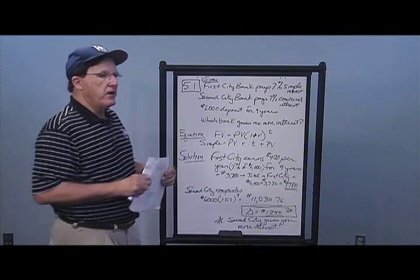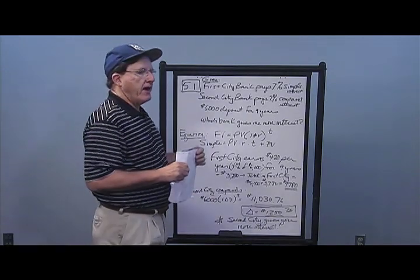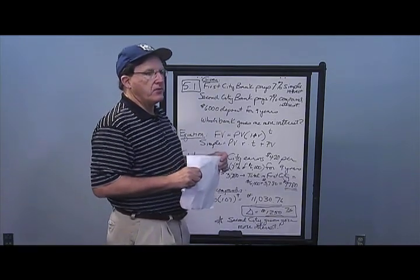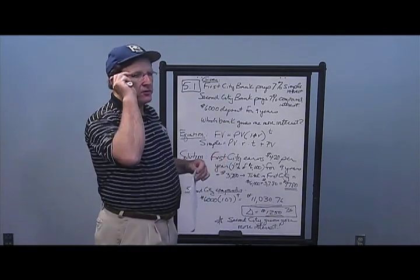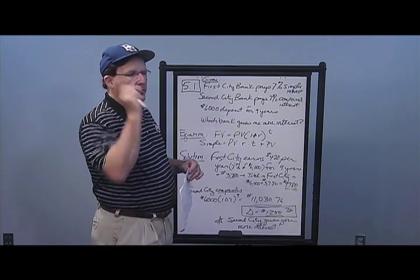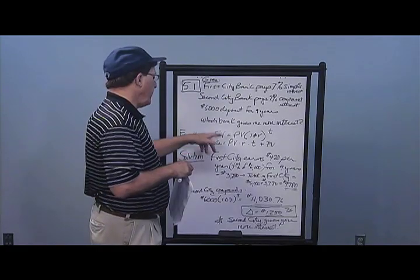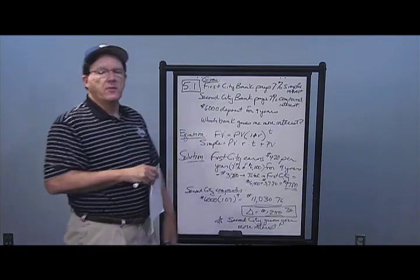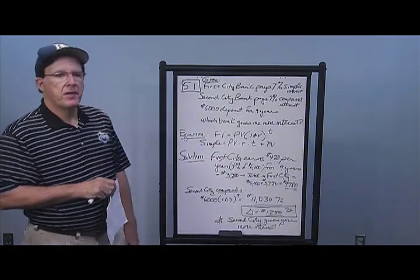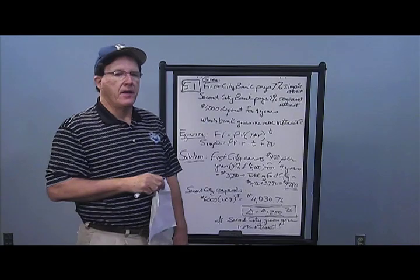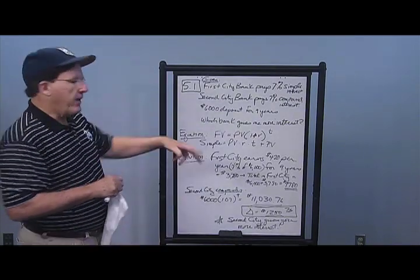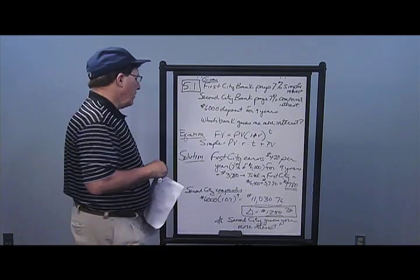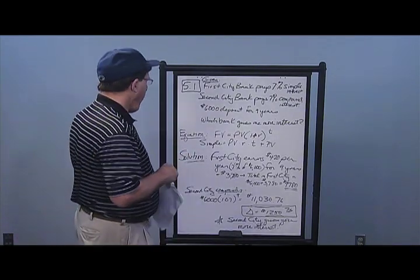The standard equation for chapter five for compounding is: future value equals present value times (1 + R) to the T. To calculate simple interest, it's just PV times R times T, then add back the original amount PV.